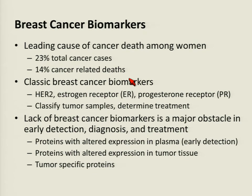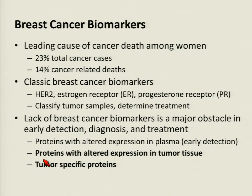Breast cancer is a leading cause of cancer death among women, making up 23% of cancer cases and 14% of cancer-related deaths. The classic breast cancer biomarkers, such as HER2, estrogen receptor, and progesterone receptor, have been successful in classifying tumor samples and determining treatment. However, the lack of breast cancer biomarkers remains a major obstacle in early detection, diagnosis, and treatment. Many groups have focused on discovering proteins with altered expression in plasma for early detection, while we focus on identifying proteins with altered expression in tumor tissue and tumor-specific proteins as target strategies.